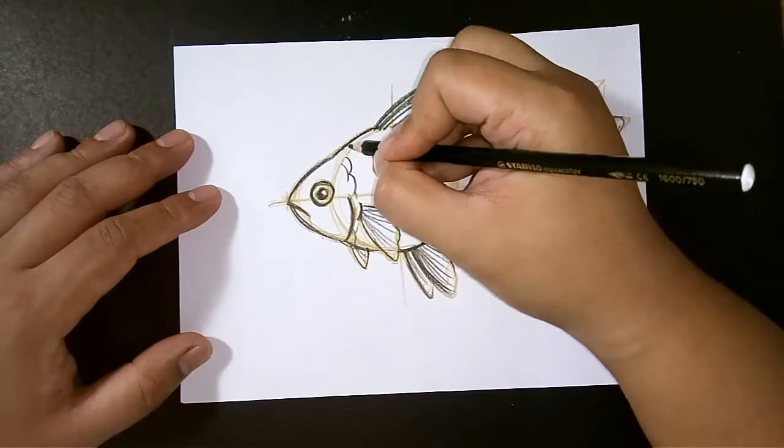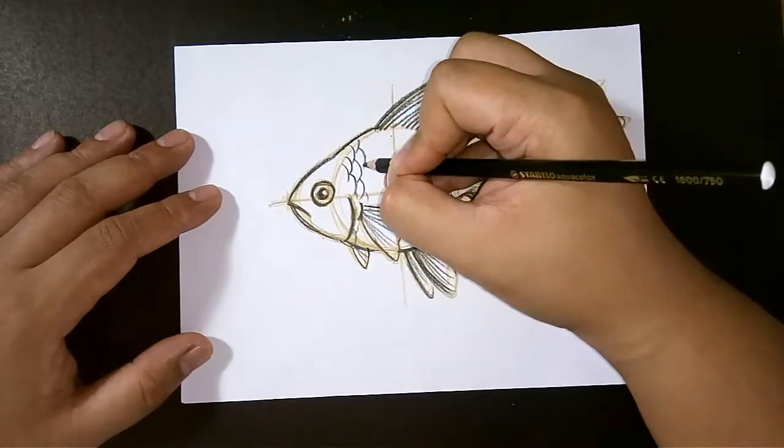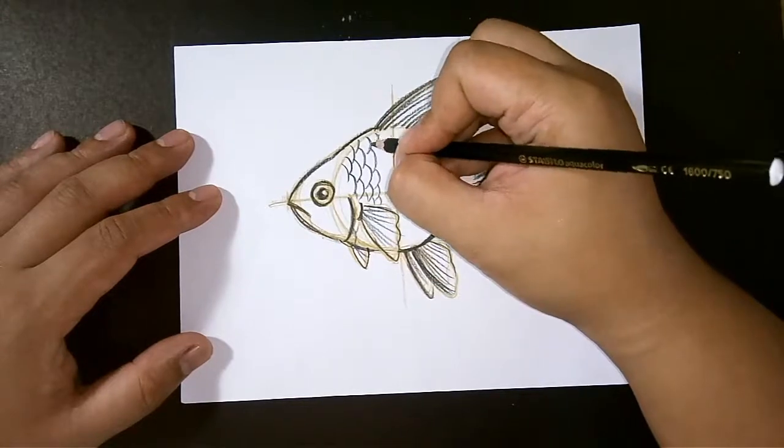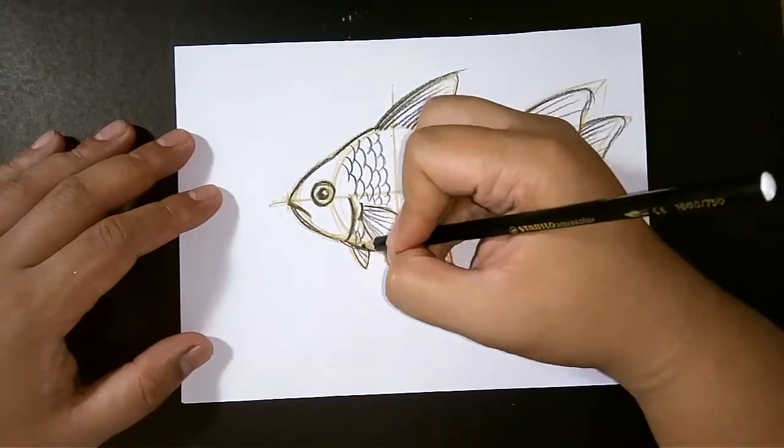And as for the scales, just make a C shape or scallop strokes, alternating the one before it, just like what I'm doing here.